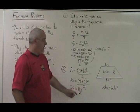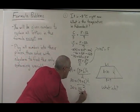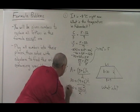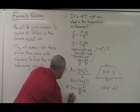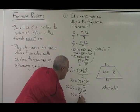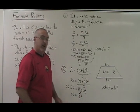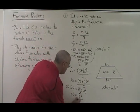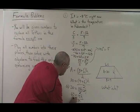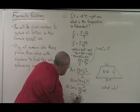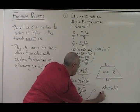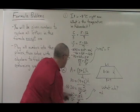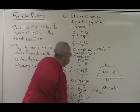Let's start simplifying. 30 equals 9 plus 6, which is 15, so 15H over 2. Our 15H is being divided by 2, so let's multiply both sides of the equation by 2. These cancel. We end up with 60 equals 15H. We divide both sides of the equation by 15, cancel, and we get our answer: H equals 60 divided by 15, which is 4.